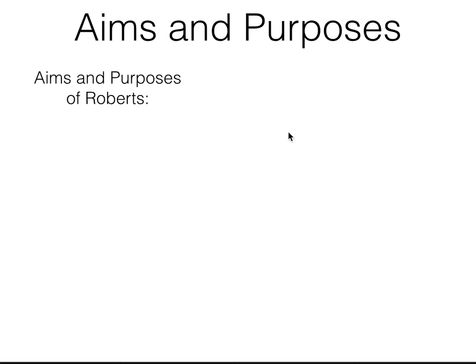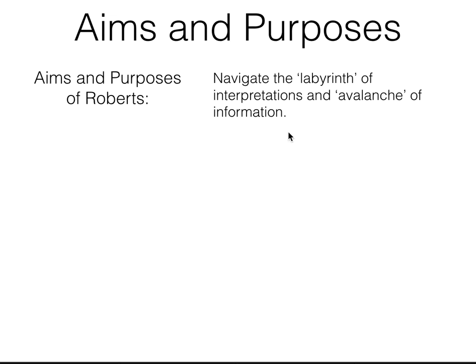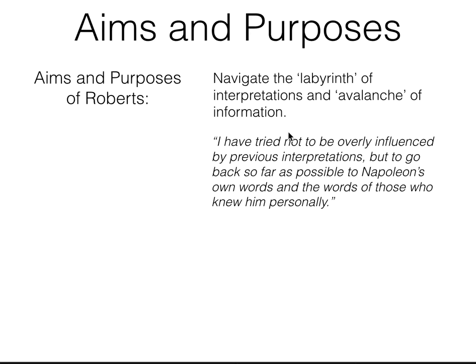What are Roberts' aims and purposes in creating this work? He claims in the introduction that a big part of his purpose is to navigate what he calls the labyrinth of interpretation — this complex web of interpretations — and the avalanche of information, recognising that Napoleon has been written about thousands of times. He's trying to cut through that and say something clear based upon the empirical record. His claim is that he's tried not to be overly influenced by previous interpretations, but to cut through them.